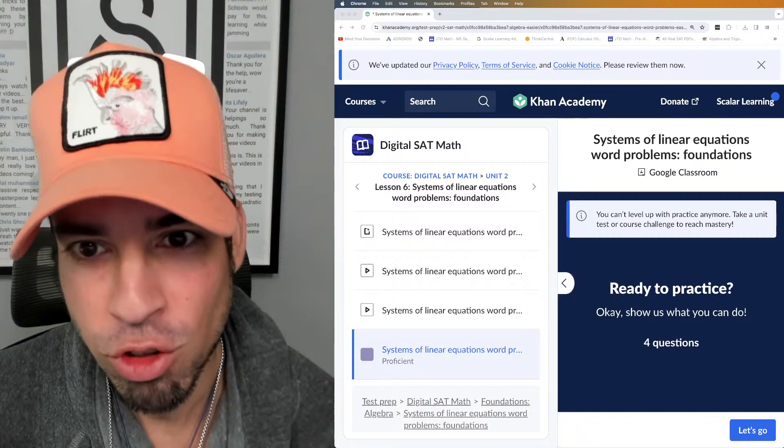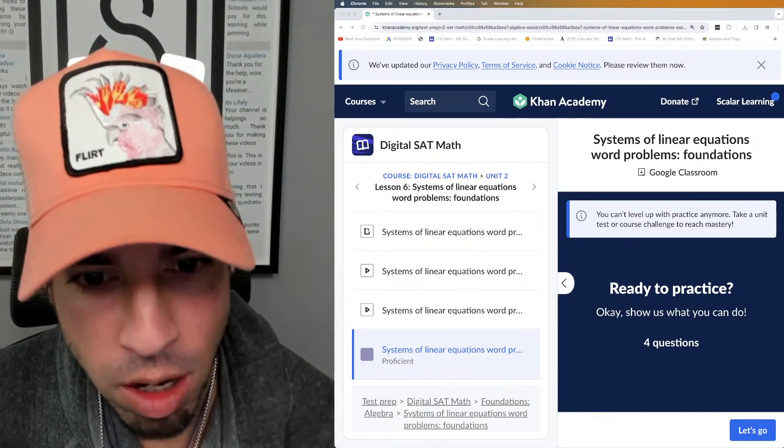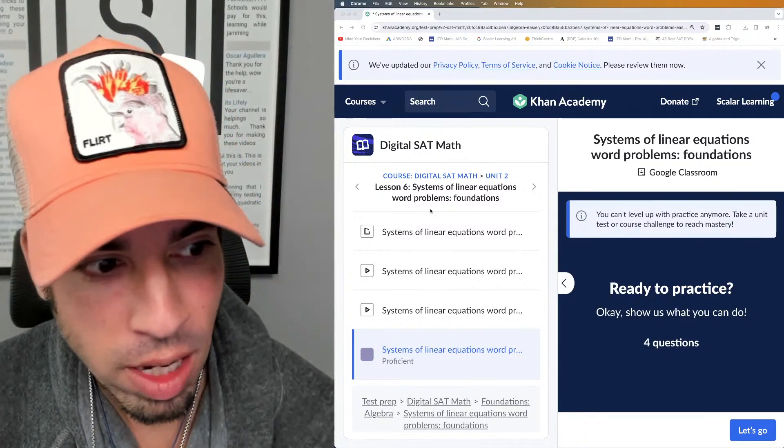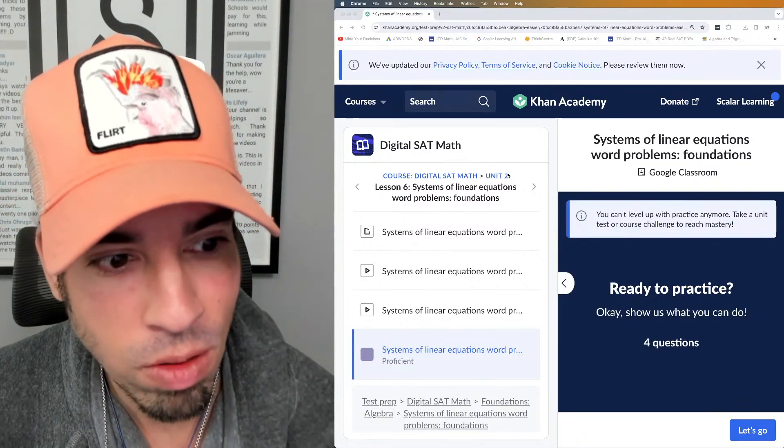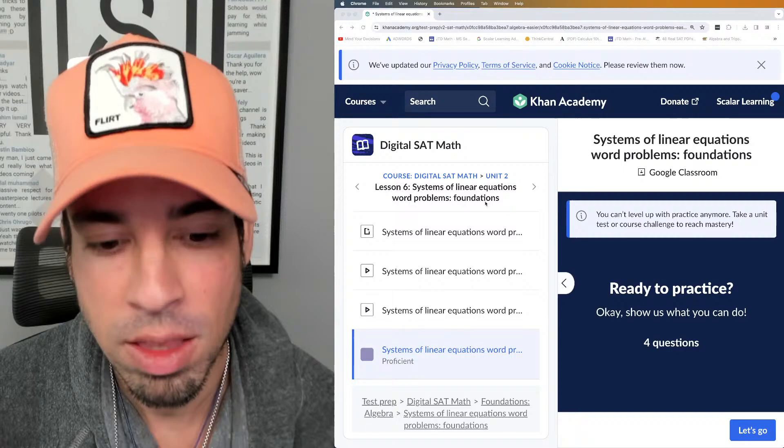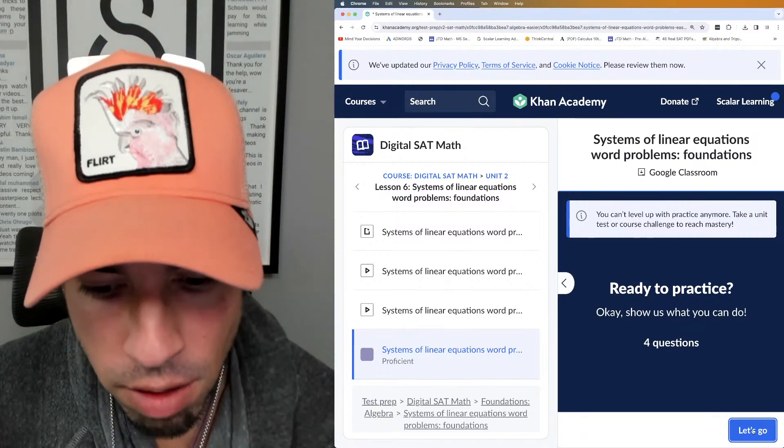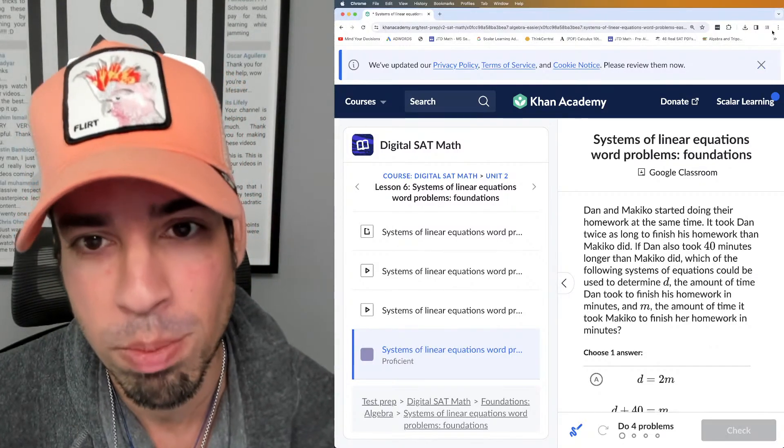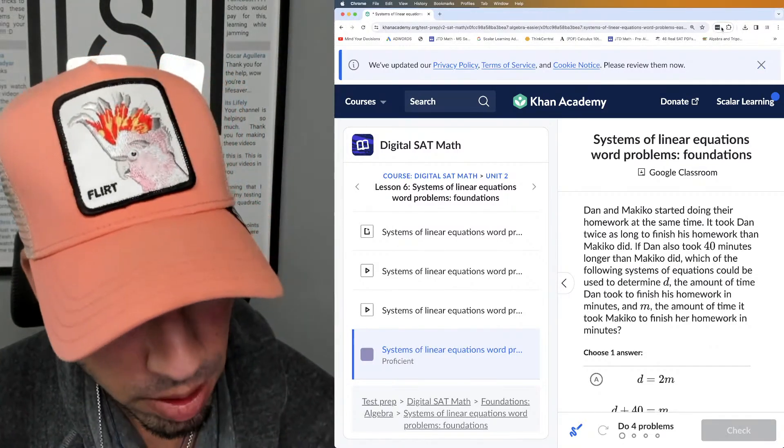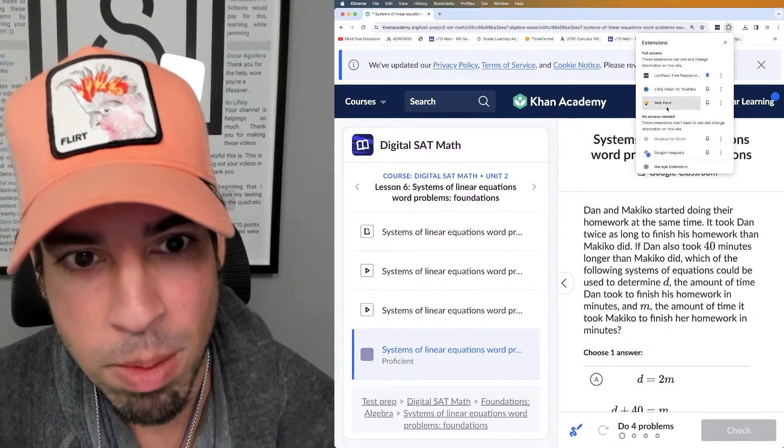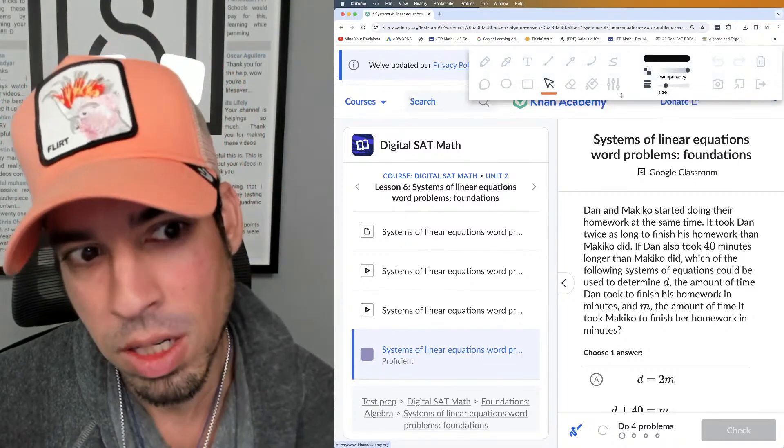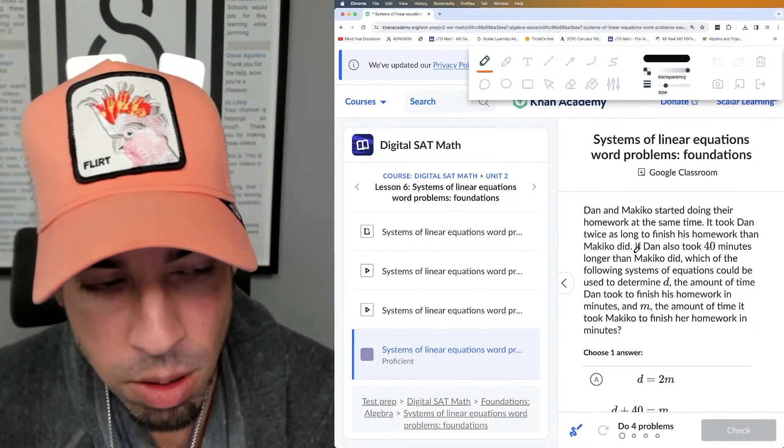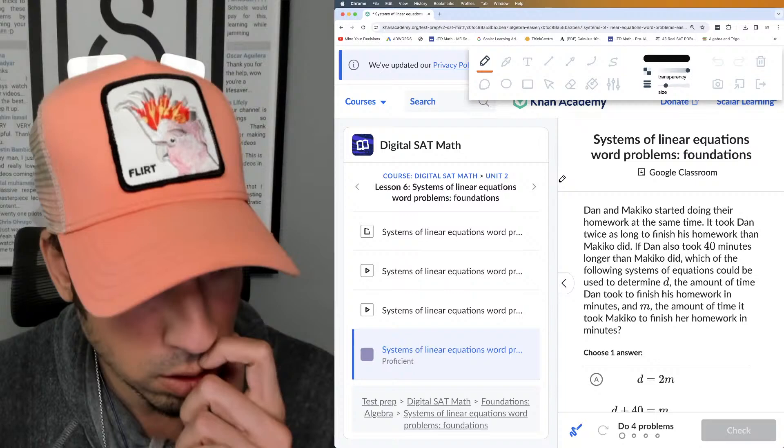What's up everybody and welcome back to another live stream from the Scalar Learning channel. We are moving on with their SAT Khan Academy math here for the digital SAT onto lesson six: systems of linear equations word problems on the level foundation. If you're watching this series, we're going to bang out four problems. I'm going to explain them as we go and teach through the process of solving. This is going to be great for anybody who's prepping for this upcoming March SAT or any SAT in the future.